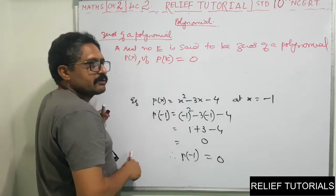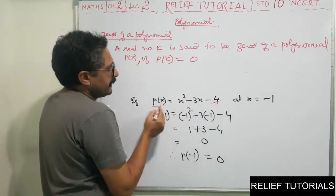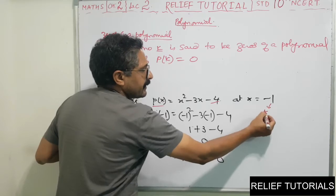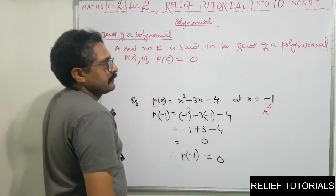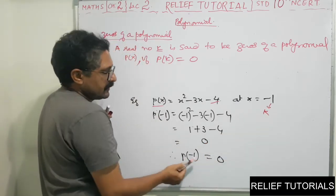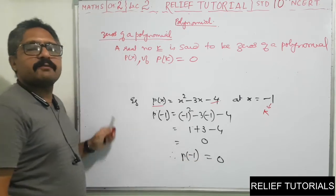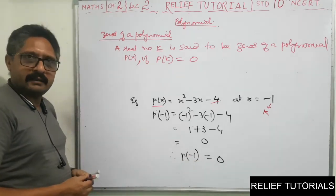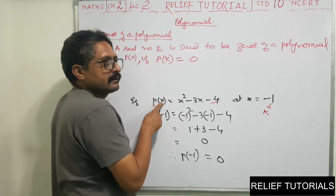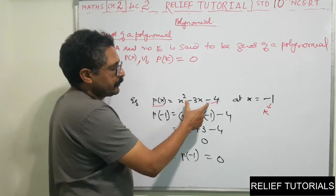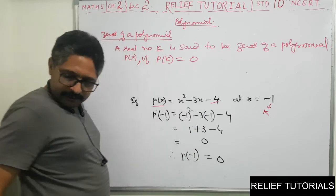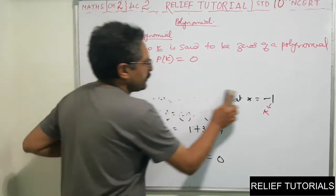In our case, P of X is the polynomial and K is minus 1. We computed P of K and got 0. So minus 1 is called a zero of the polynomial — it is the value of X for which the polynomial becomes zero.